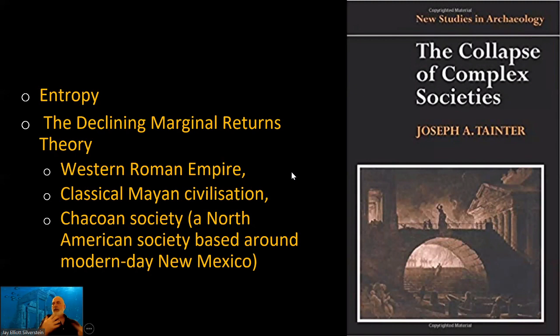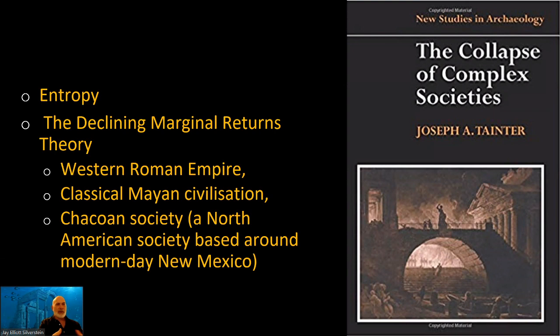We left off getting into Joseph Tainter's work, which is probably one of the most cited works on the collapse of civilizations. I think of it in terms of entropy — systems tend to become less efficient, move toward chaos, and it takes energy to hold them together. We see this now with the coronavirus: we have to make an effort to recreate order that's been disrupted — developing internet capabilities, maintaining infrastructure, adjusting teaching and learning styles.